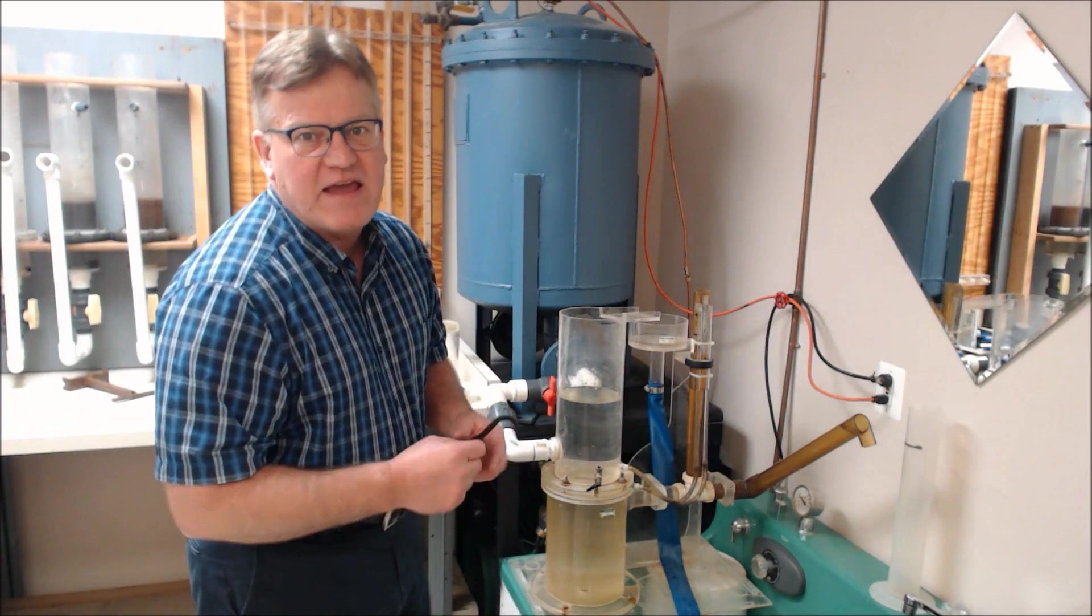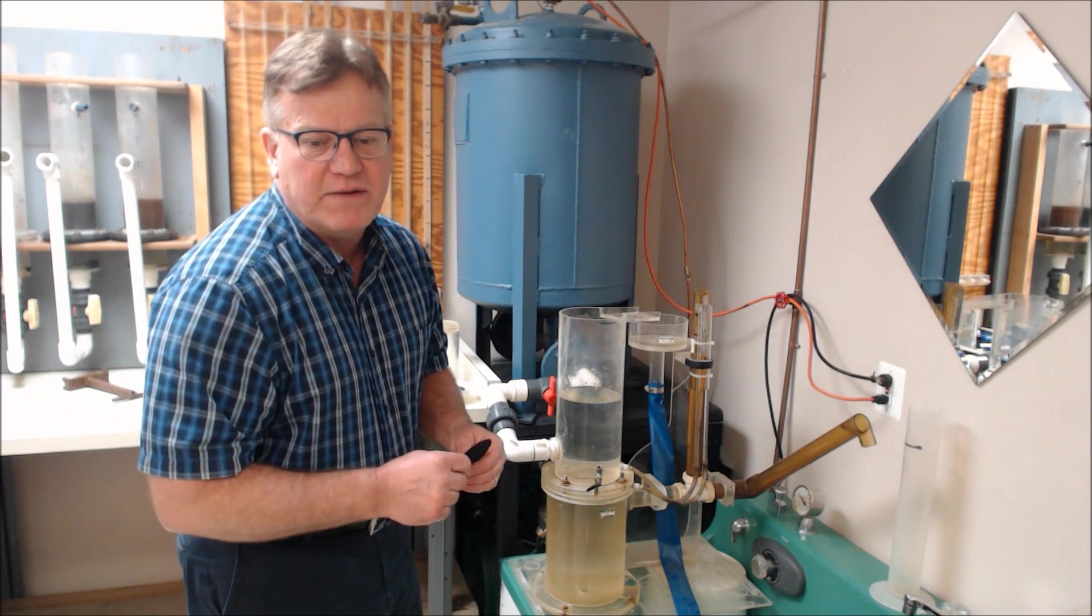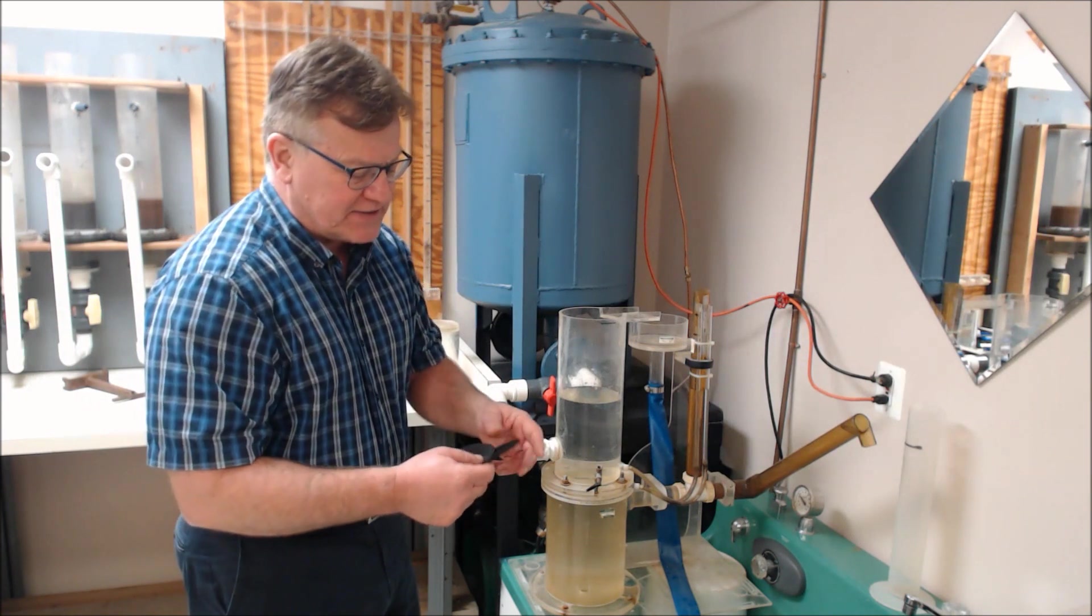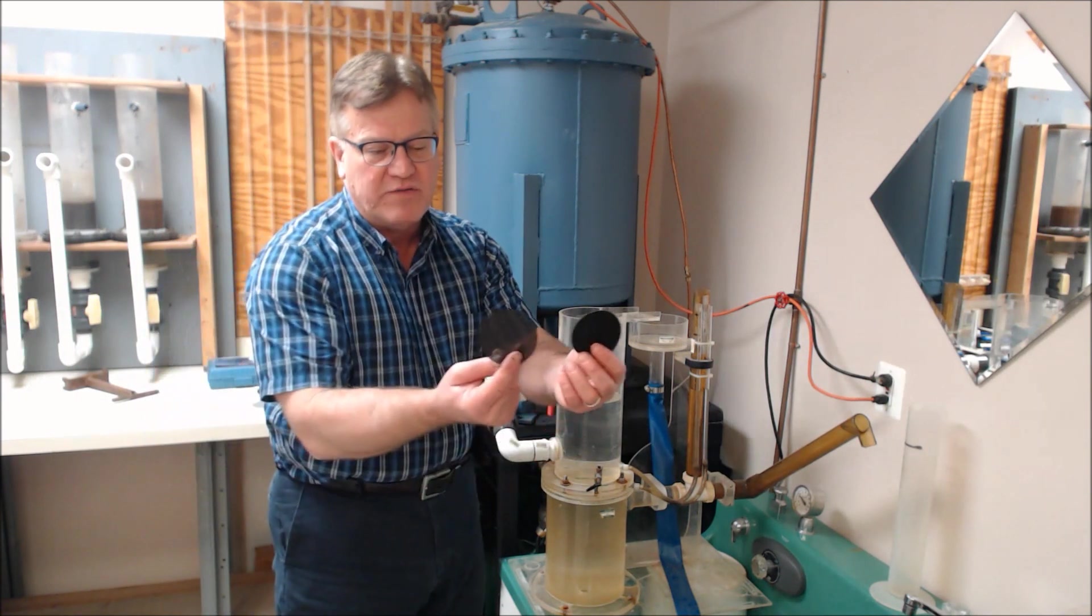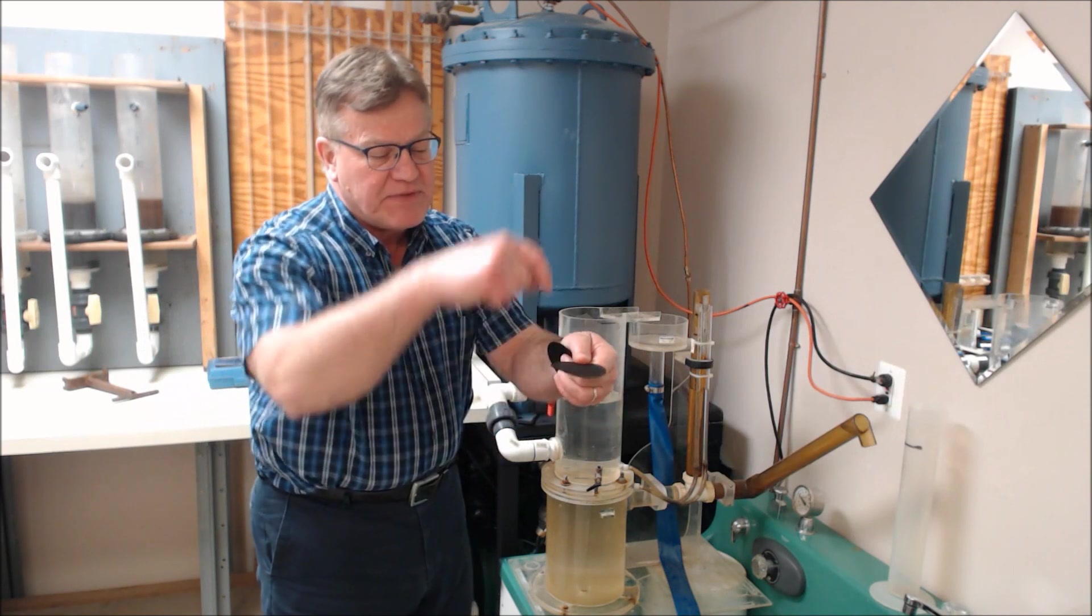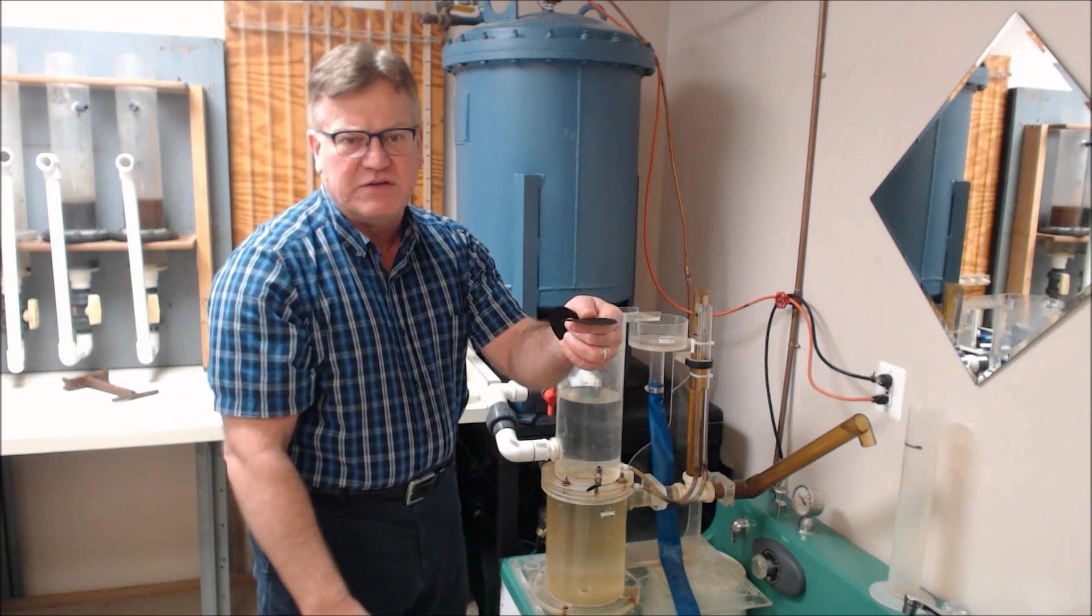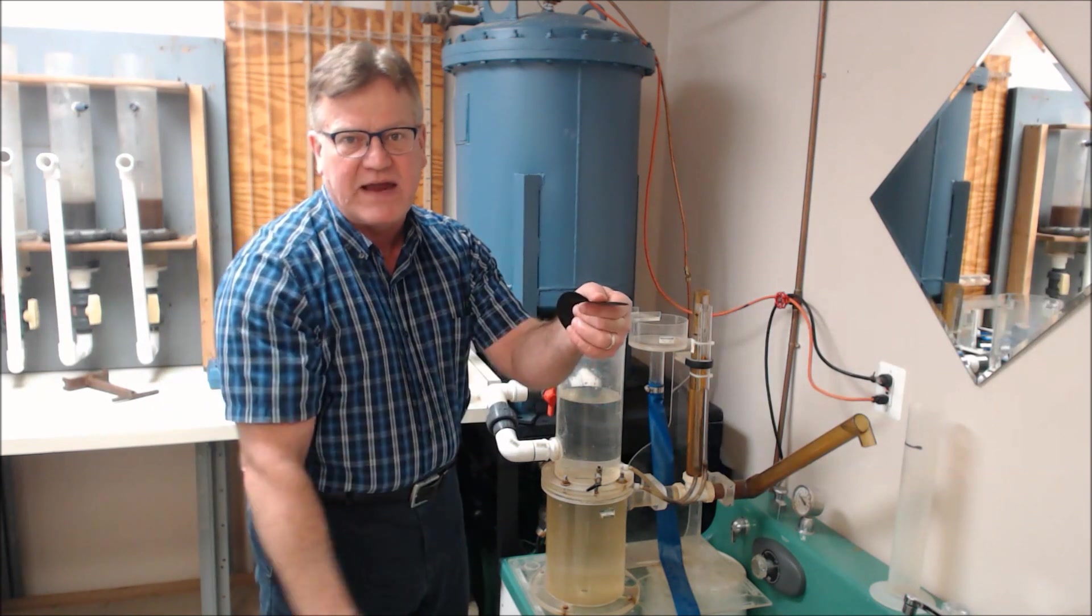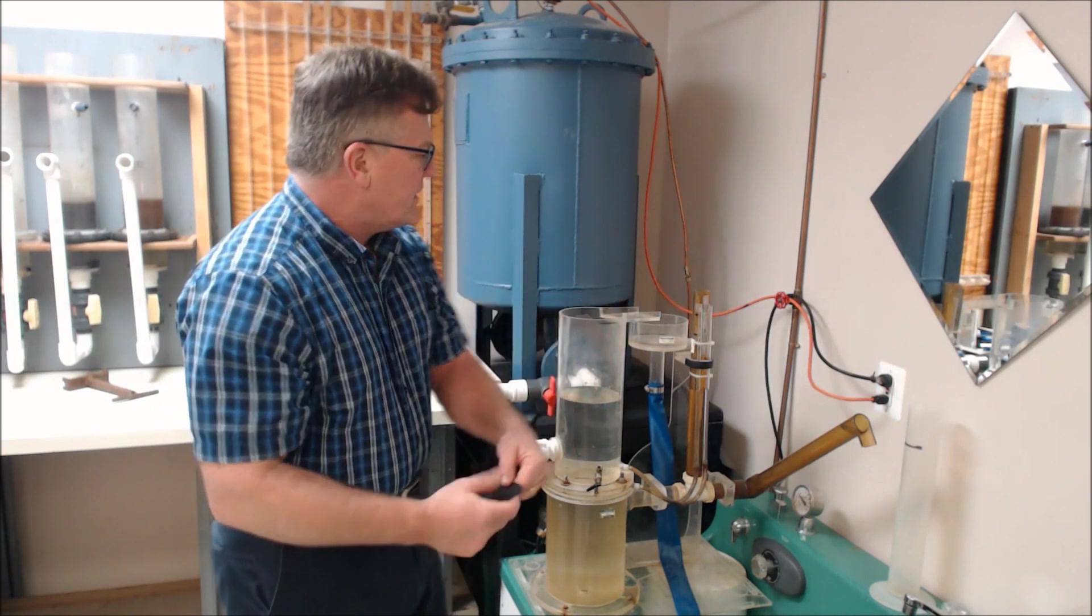This is ASTM D4491, Permittivity of Geotextiles. We have a non-woven and a woven textile here, and we're interested in the cross-plane flow, the flow perpendicular to the plane of the geotextile.